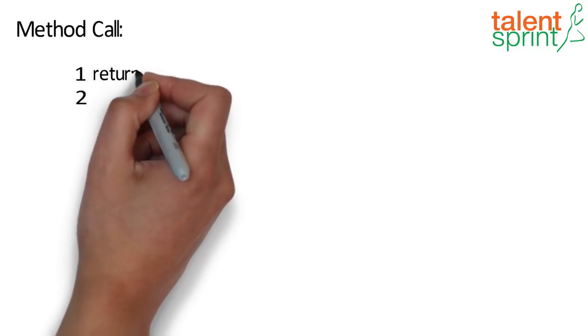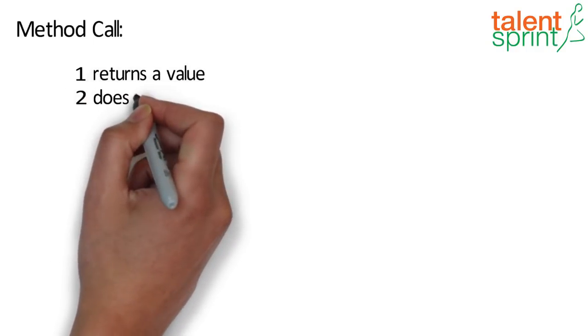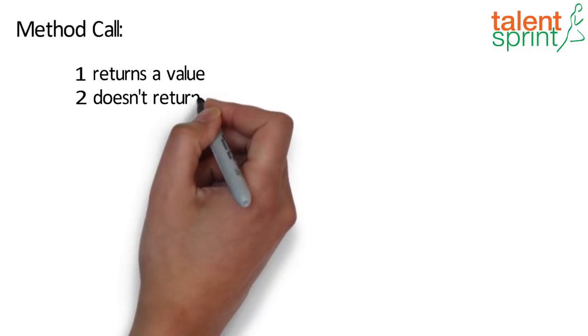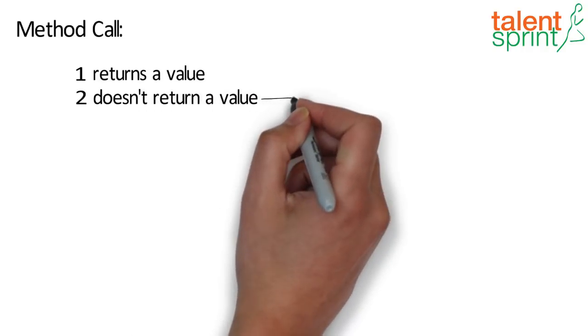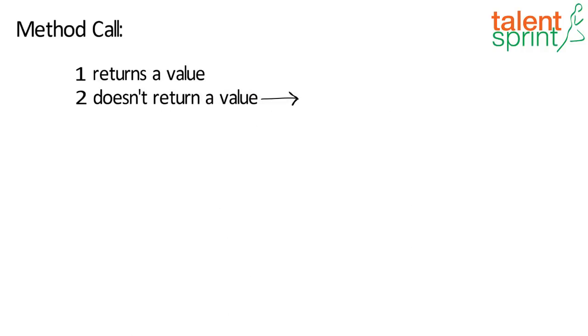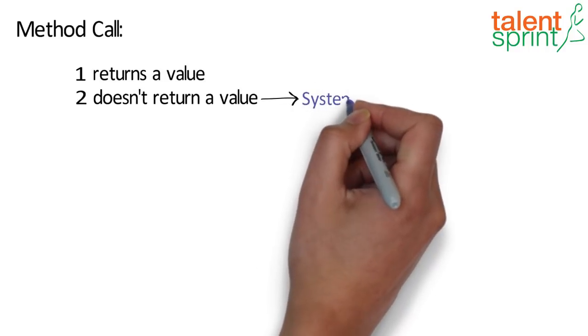There are two ways to go about it depending on whether the method returns a value or not. When it doesn't return a value, you can directly call the method like a statement, say for example your System.out.println method that prints something on the screen.